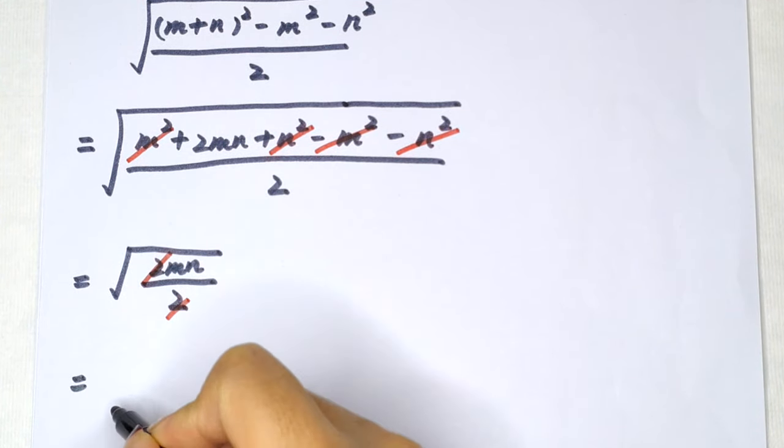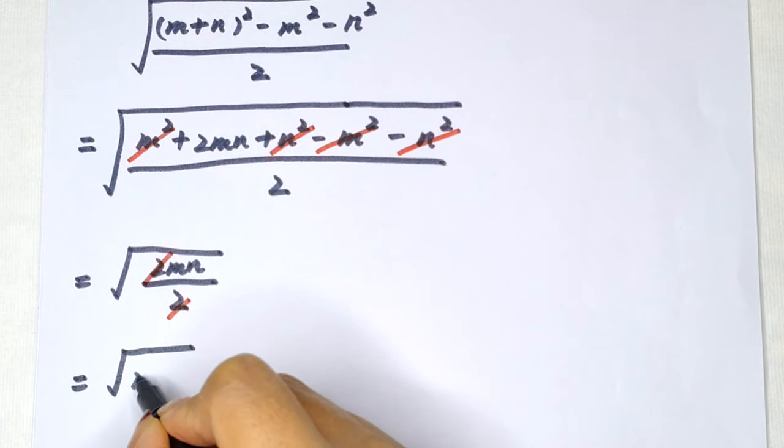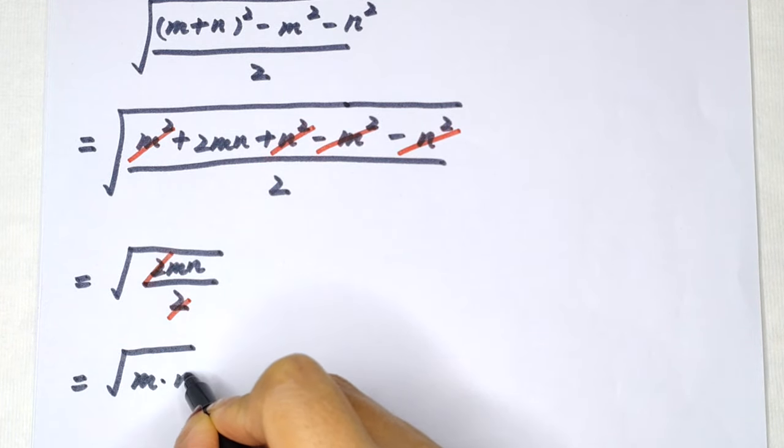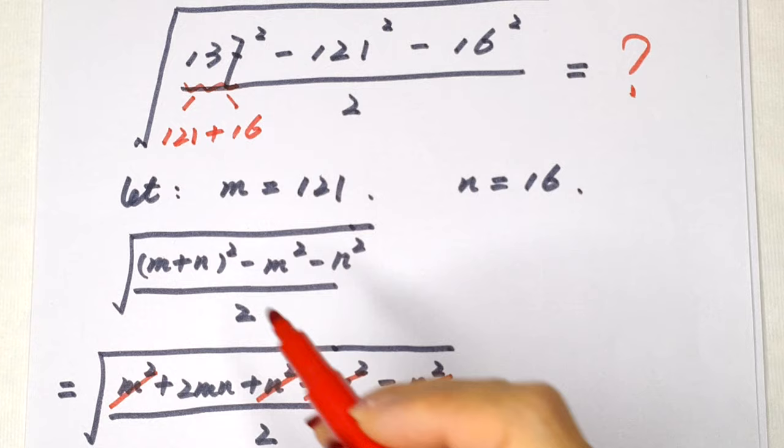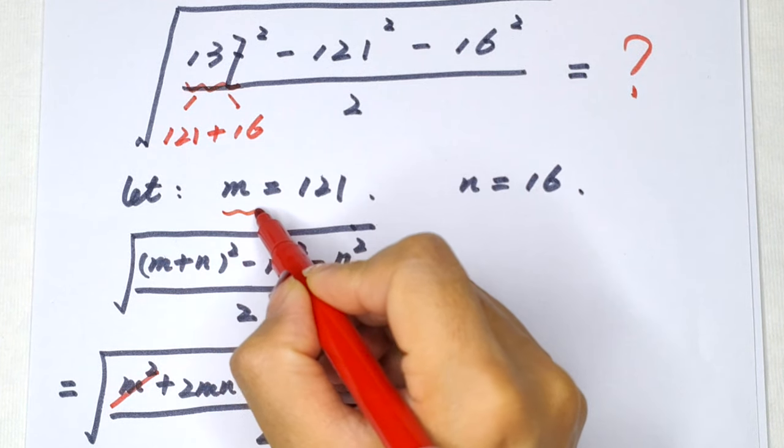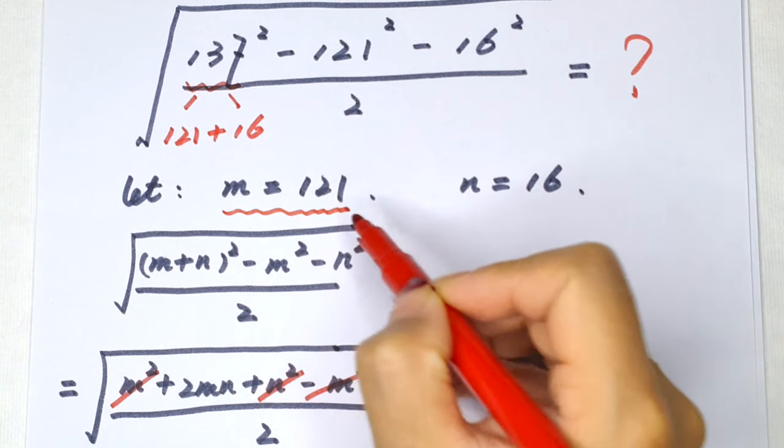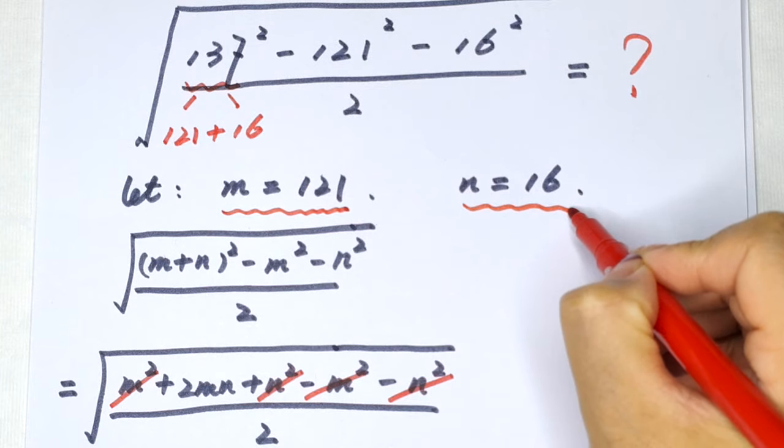So it will be equal to square root of m times n. Then we let m equals 121, and n equals 16.